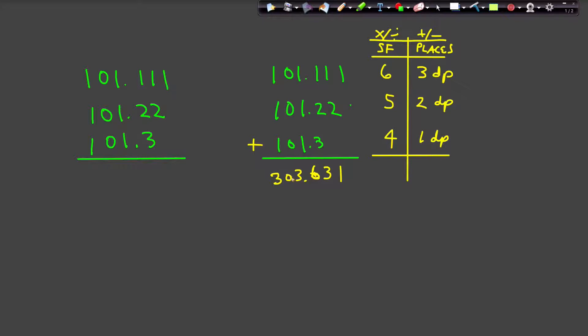So what should I report this answer? It's easy. I only need to pay attention to this column. I do not care about this column because I'm not multiplying or dividing. I am adding or subtracting. So I'm going to use the places rule. The least precise number here is the first decimal place.